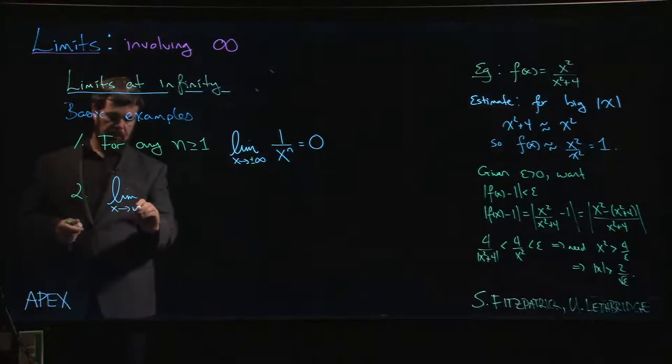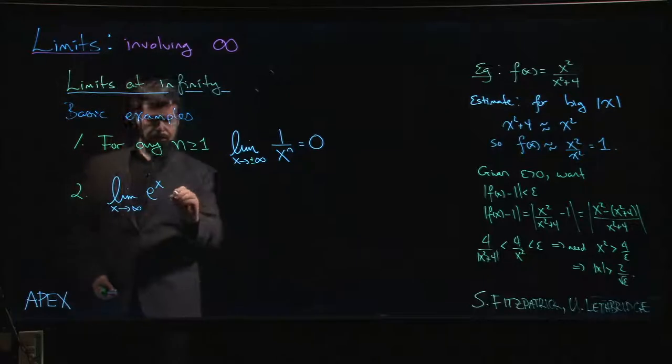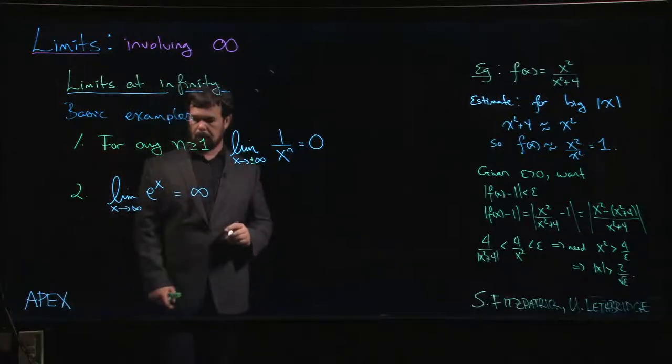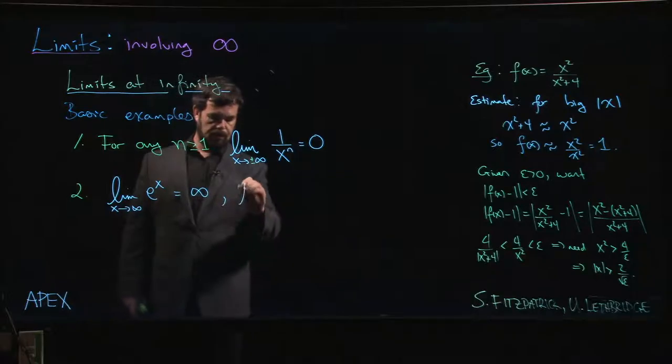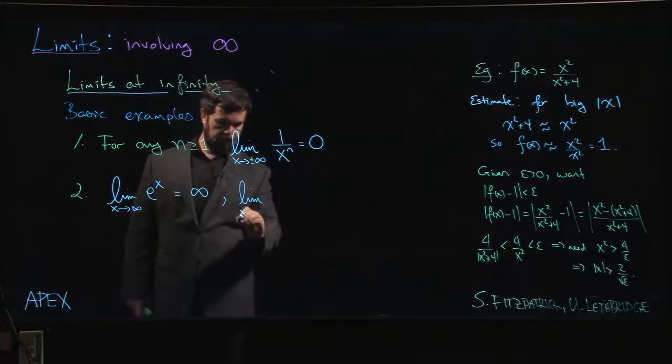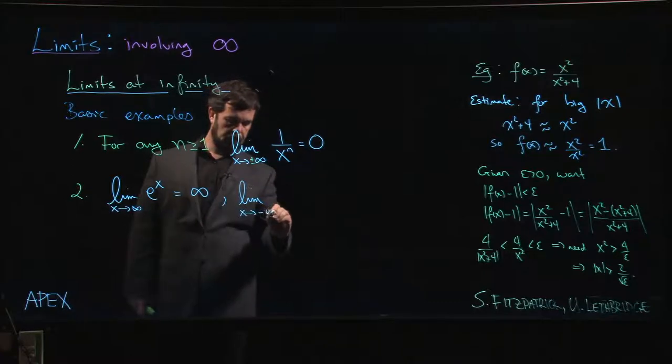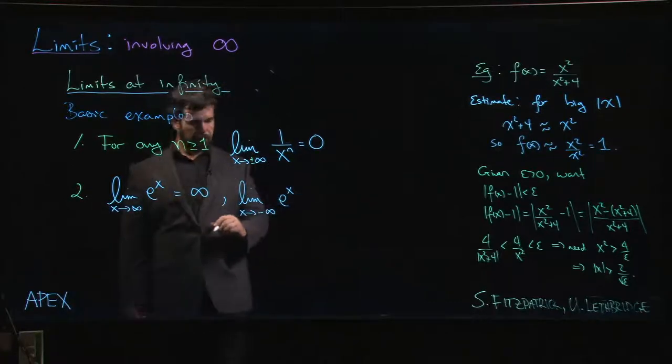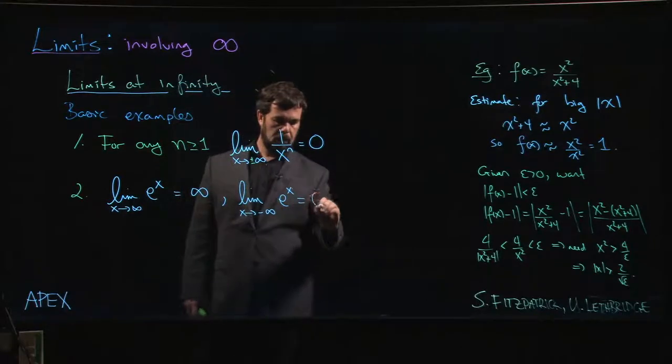The limit as x goes to plus infinity of e to the x is infinity, but the limit as x goes to minus infinity of e to the x is 0.